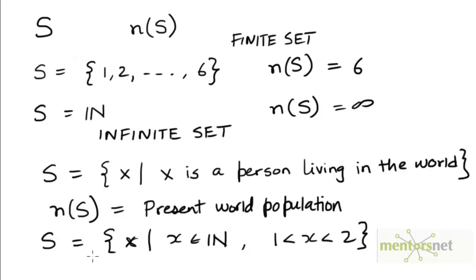Now suppose we define a set S as a set of objects X such that X is a natural number and X lies between 1 and 2. How many elements does this set S have?